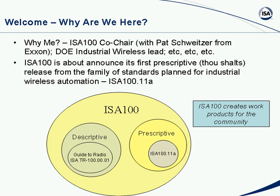It will be called ISA 100.11a. As the diagram shows, the ISA 100 committee has work products that are both descriptive and prescriptive. Descriptive work products are how-to manuals or information guides. The first one that came out is in draft form and is available online — it's called the Automation Engineer's Guide to Radio, also known as the Physics of Radio. We're also working on a user's guide, which will be a descriptive document.